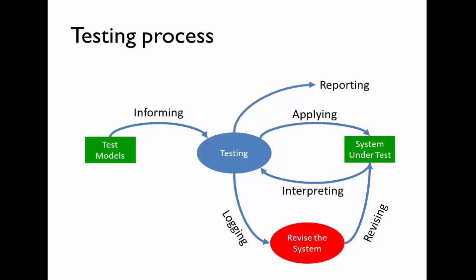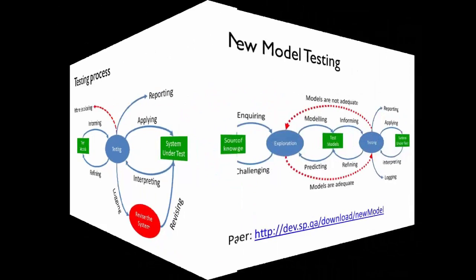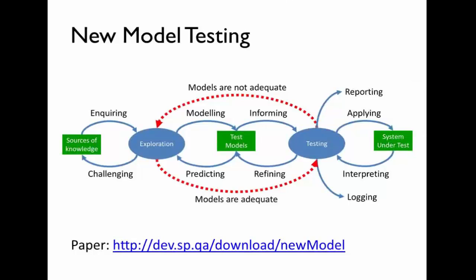I do some reporting — I need to tell someone about what I've just done or act on what I've just learned. But sometimes when I run my tests, my interpretation tells me: our models aren't good enough, we don't know enough about the system to apply good tests yet. So we have this return loop of refining the model, and we might go back and do more exploring — let's go back to the requirements. And this is the whole picture end to end. It looks like a crawling insect, and that wasn't intentional.